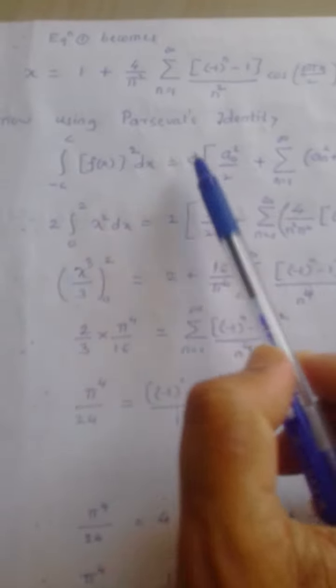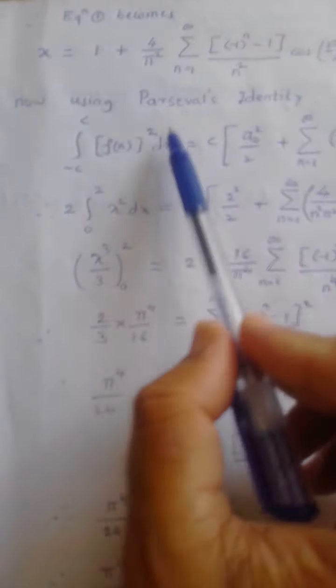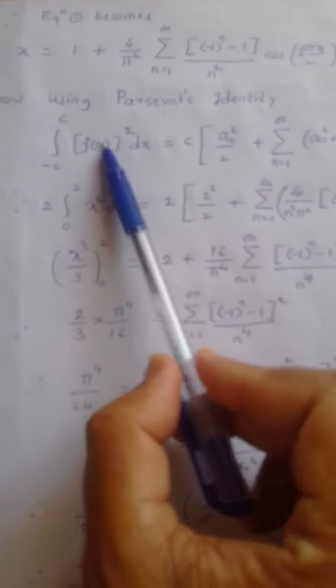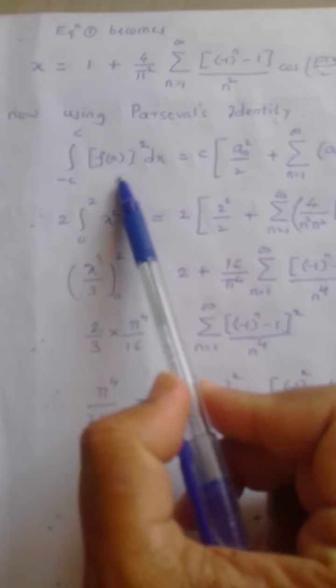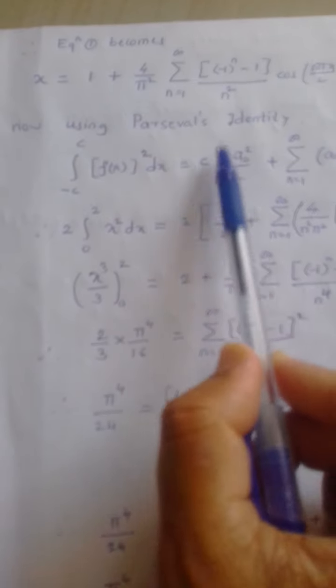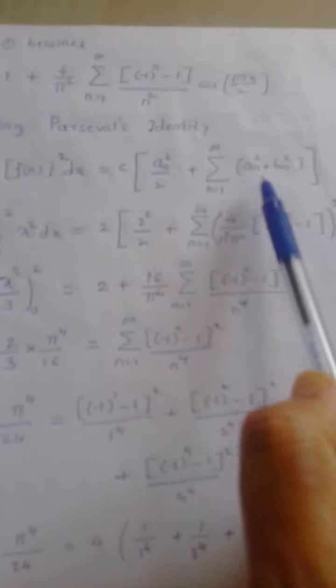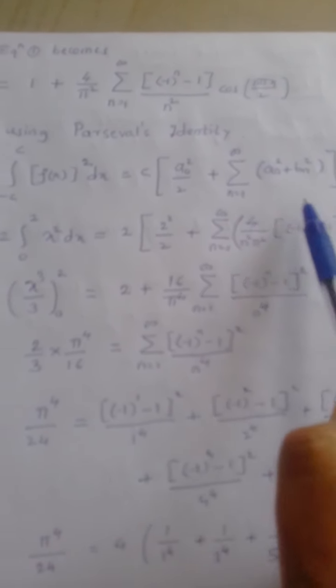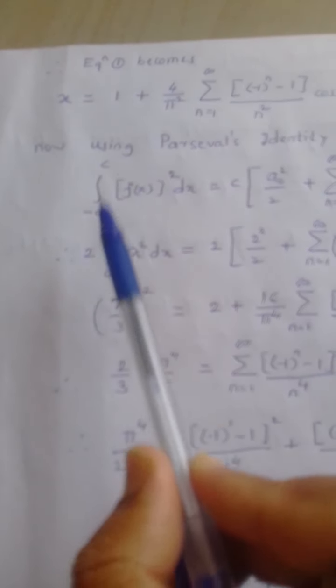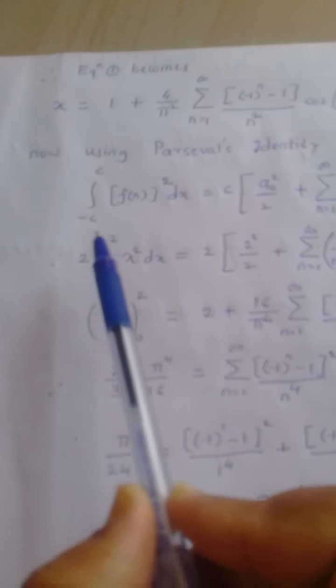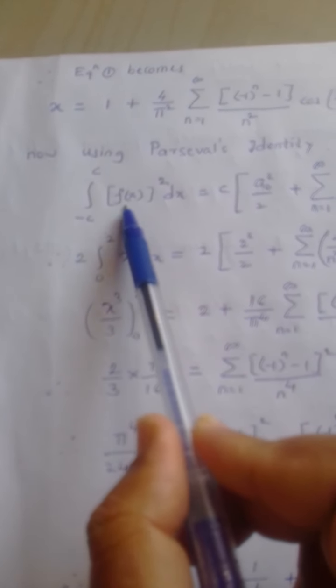Now, using Parseval's identity to prove the required equation. Parseval's identity states: integral from −c to c of [f(x)]² dx = c × [a₀²/2 + summation n from 1 to infinity of (aₙ² + bₙ²)]. We substitute the value of c; the interval becomes −2 to 2 with f(x) = x, giving integral of x² dx.